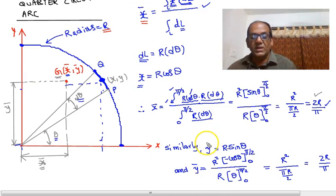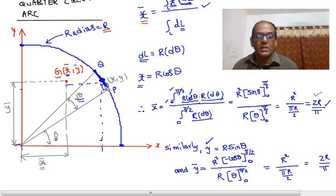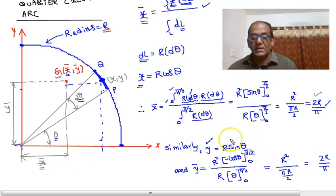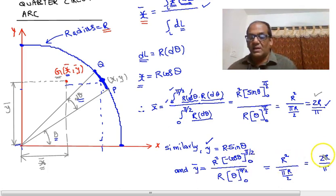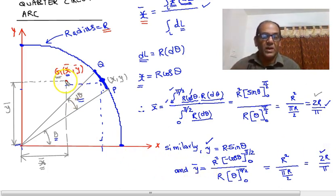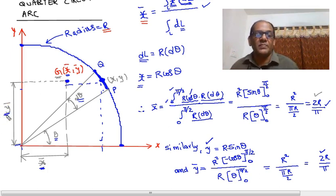Similarly, the y-coordinate of the centroid uses r·sin(theta). So y-bar is the integral between limits 0 to pi/2 of sin(theta), and the integral of sin(theta) is minus cos(theta). We simplify the integration to find that the y-coordinate is also given by 2r over pi. So the centroid G is located at x-bar = 2r/pi and y-bar = 2r/pi.